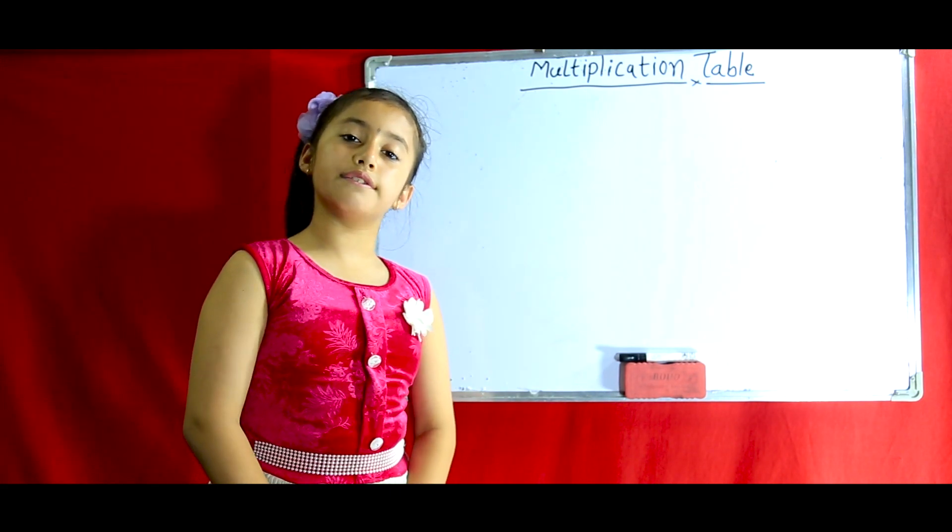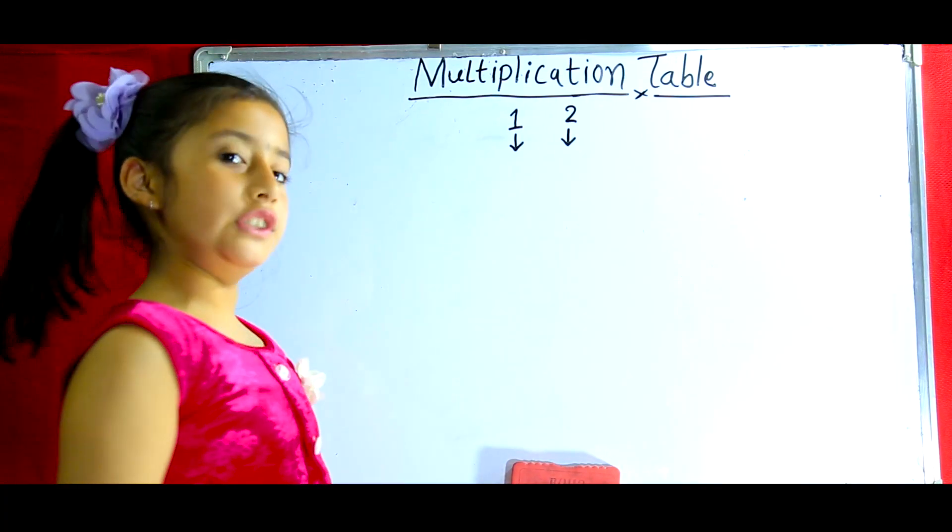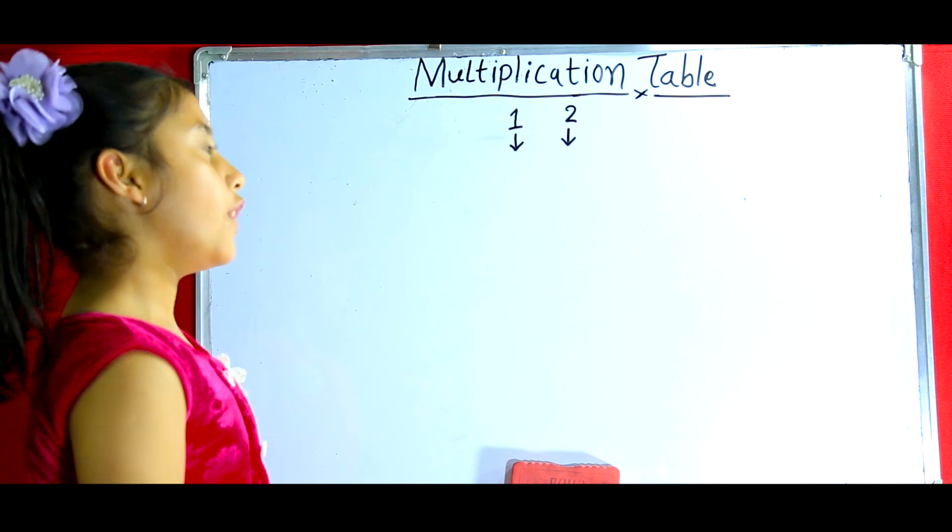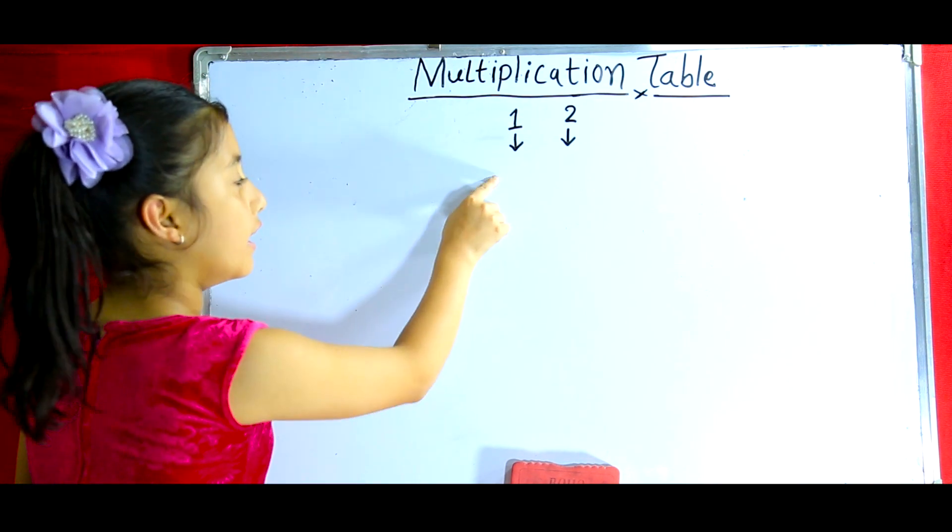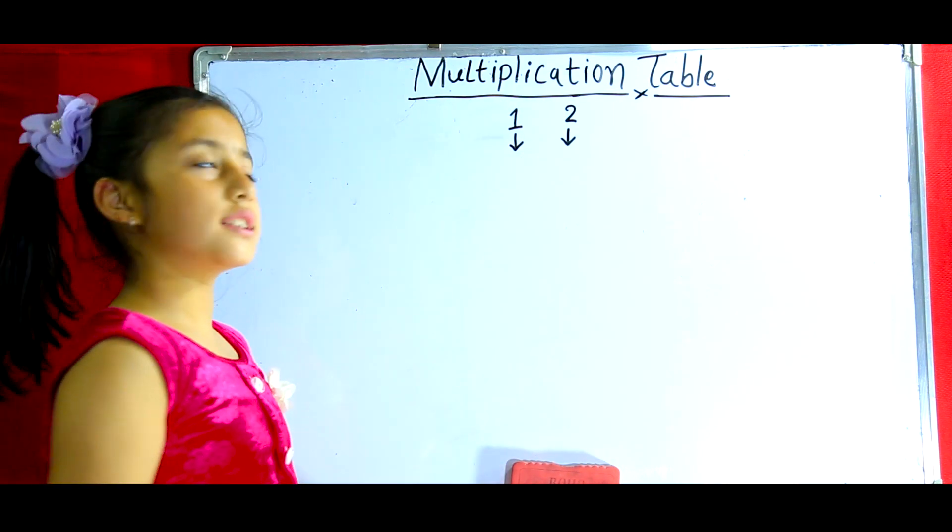So let's start with the table of 12. Before writing the table of 12 you need to follow these instructions. First on the left side write the table of 1 and on the right side write the table of 2. So let's start it.